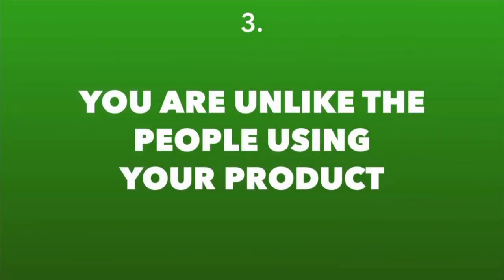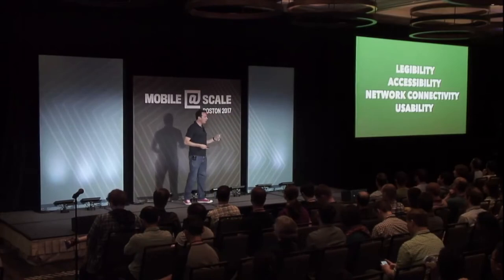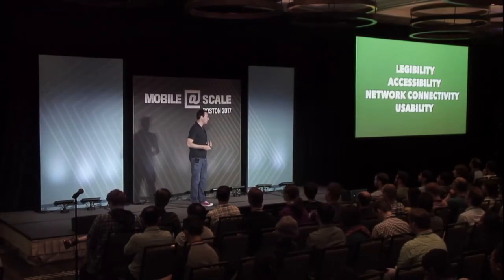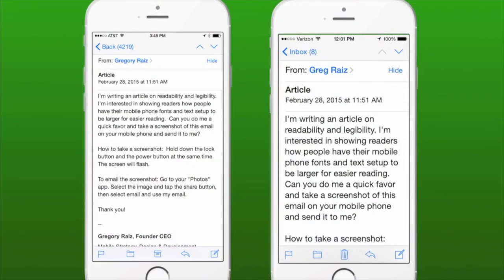The next thing I want to talk about is who our users are and how we think about that. We — everyone in this room, anyone listening to this video — are unlike the people who use our products. We're different in many ways: legibility, accessibility, network connectivity, and usability. As a simple test, I sent an email to friends, family, designers, and engineers asking them to take a screenshot of what my email looked like. All my designers are using tiny fonts — they have great vision and large retina screens.